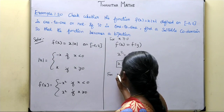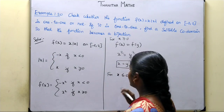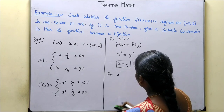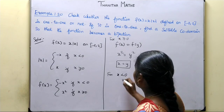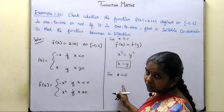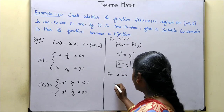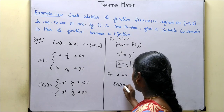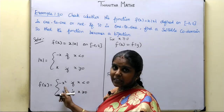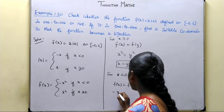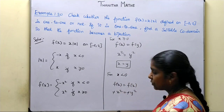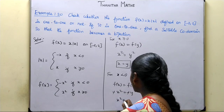Now for x less than or equal to 0, the negative value case. f of x equals f of y means minus x squared equals minus y squared. The minus signs cancel, giving x squared equals y squared.